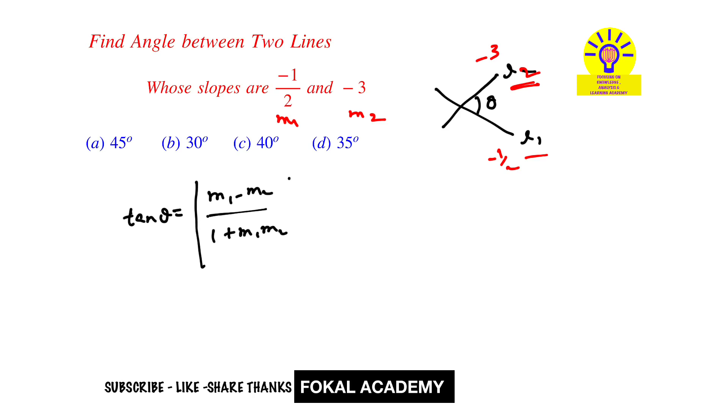Now substitute these values in this equation. Then we get tan theta equals modulus of minus one-half plus three upon one plus minus three into minus one-half.